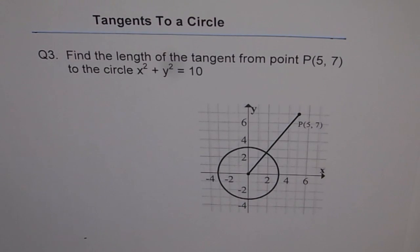Tangents to a circle. Question 3. Find the length of the tangent from the point P(5,7) to the circle x squared plus y squared equals 10.